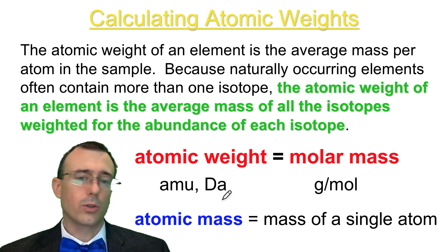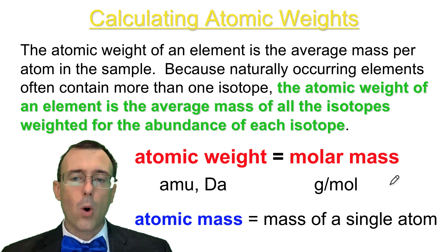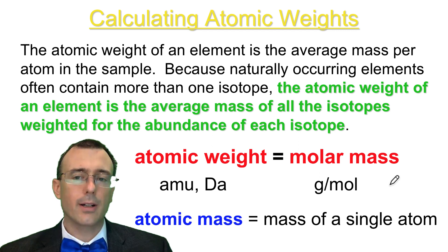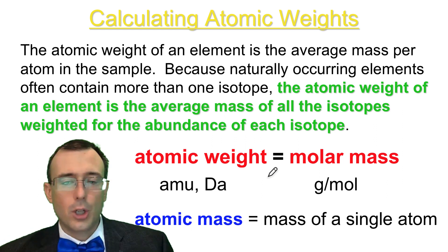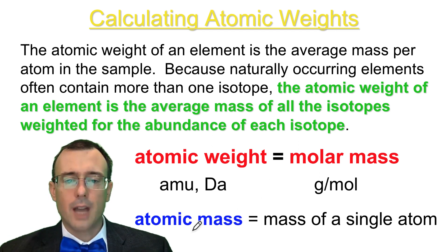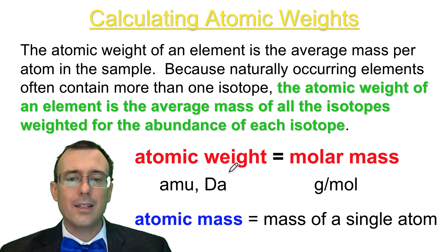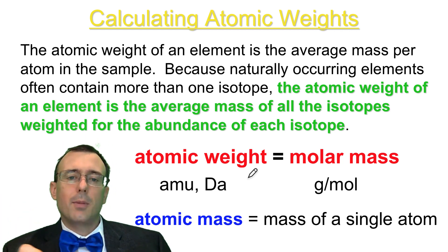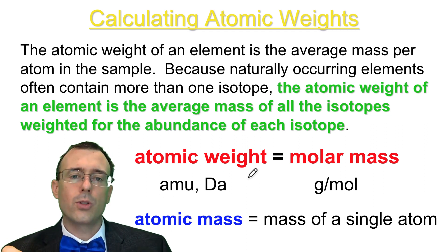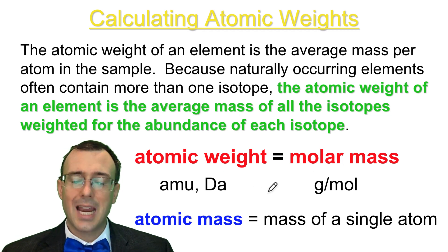The atomic weight is the exact same number as the molar mass, which is really convenient when calculating the moles of a particular sample. They represent two different things, but the number is the same. The atomic weight is your average mass of atoms in a sample in AMU or Daltons. The molar mass, however, is the mass of a mole of atoms — 6.022 × 10²³ atoms — expressed in grams. The atomic mass is different because it's the mass of one single atom, and the atomic weight might not equal the atomic mass of any atom in the sample if there are two different isotopes.